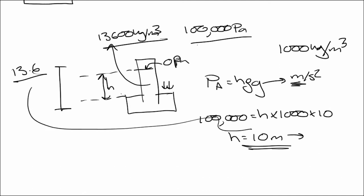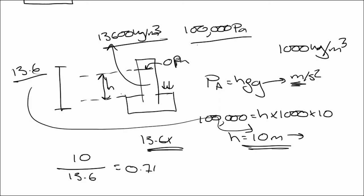Instead, we use mercury, which has a density of 13,600 kg/m³ — about 13.6 times denser than water. This reduces the height by a factor of 13.6, so 10 meters becomes roughly 0.74 meters, or 74 centimeters — a much more manageable pipe size.